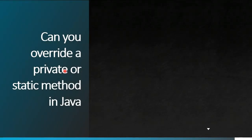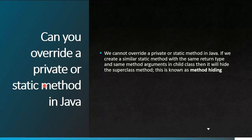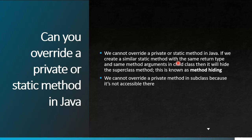The next question is: can we override private or static methods in Java? For private methods, we cannot override them because the scope itself does not reach the child class. For static methods it is a bit tricky — we can define the same static method in a child class, but what happens is method hiding, not overriding. The child class hides the parent class static method. So the answer is: we cannot override private methods, and static methods result in method hiding.